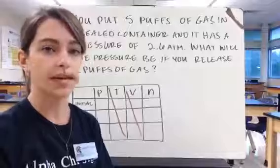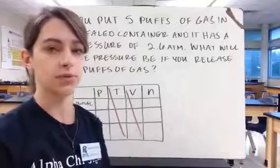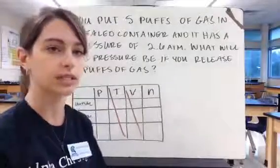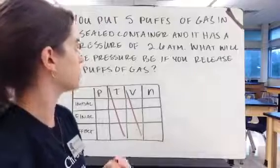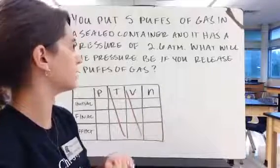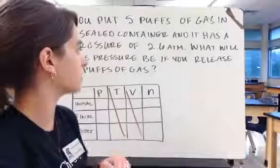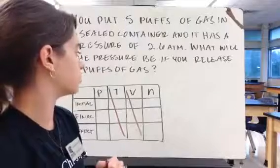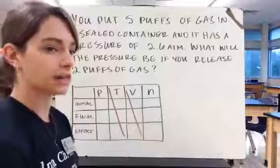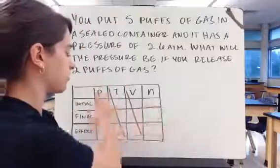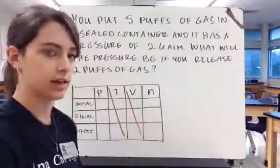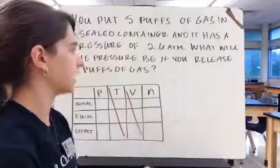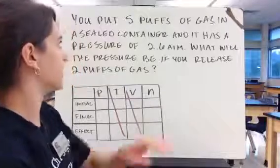So our problems for PN work very similarly to our problems from PV, so we're going to work through two examples. Our first example says you put five puffs of gas in a sealed container, and it has a pressure of 2.6 atmospheres. What will the pressure be if you release two puffs of gas? So in this case, we have our same table as before, but we're ignoring T and V because those are being held constant, and now we just have to fill in what numbers we already have.